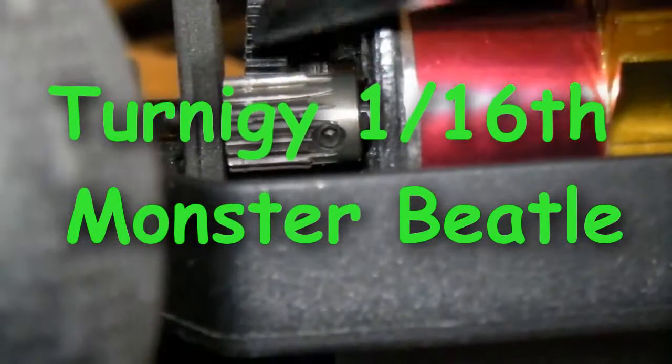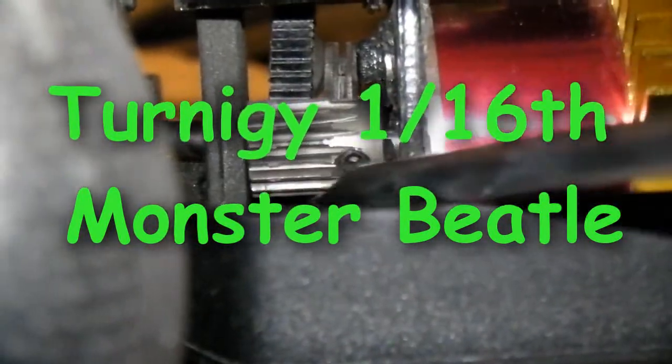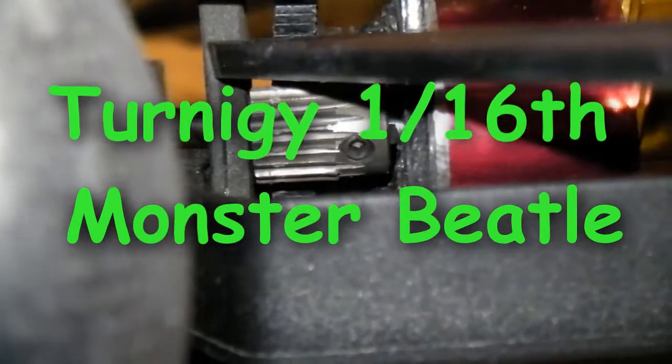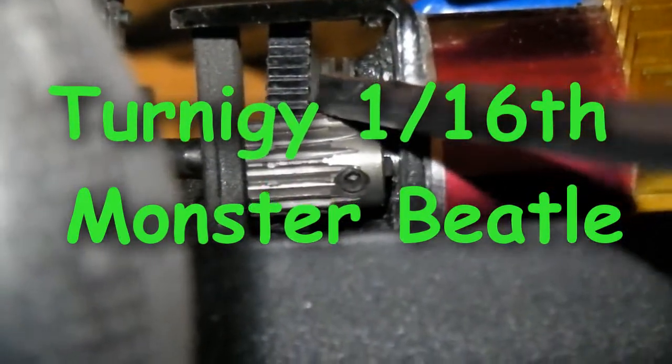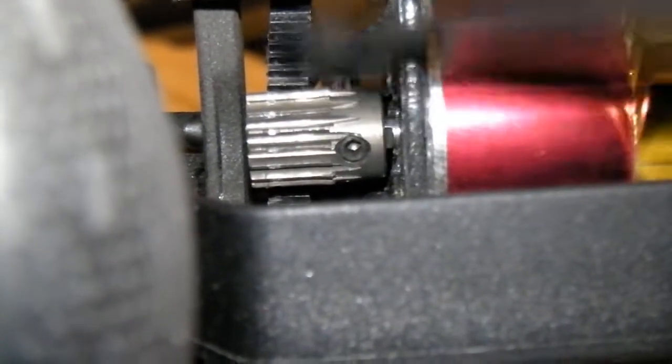So if you take a look at the pinion and the main spur gear, the pinion is pretty straight, perpendicular against this, but this one is tilted forward, and that's causing uneven wear because those teeth are not lined up.